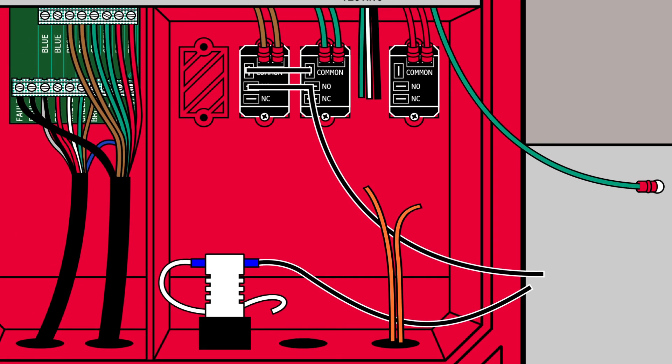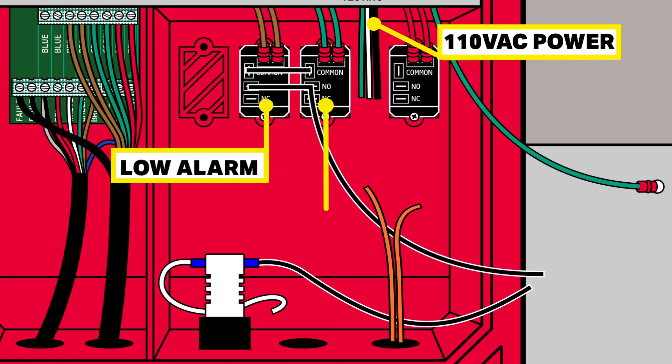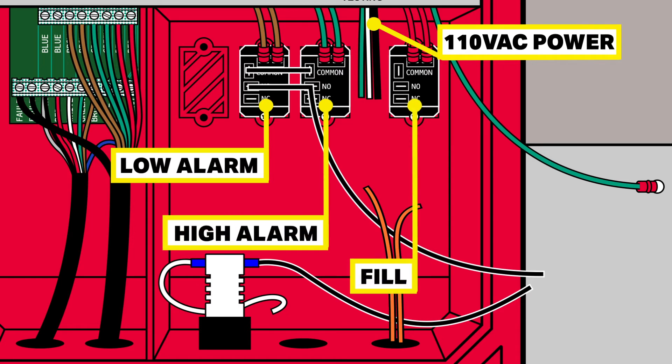In the high-voltage area, there are three power wires for the power-in connections: black, white, and green. There are also three relays for low alarm, high alarm, and fill, each with colored wire for the respective sensor rod.